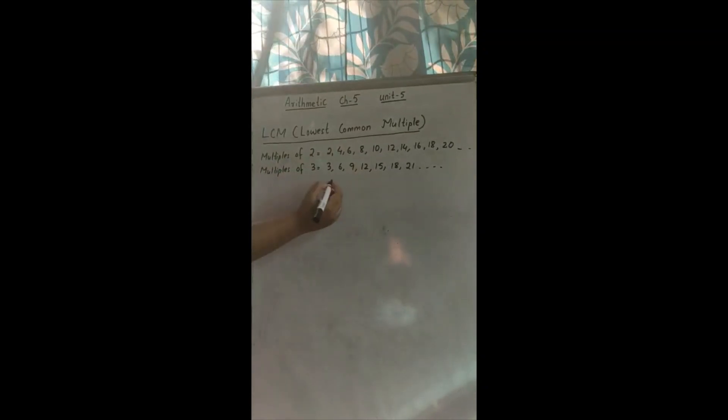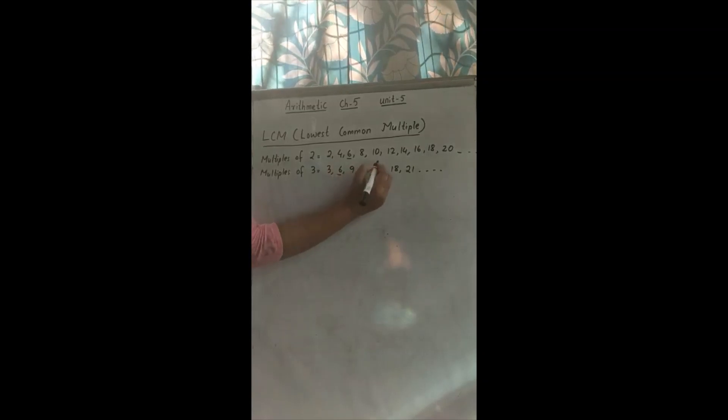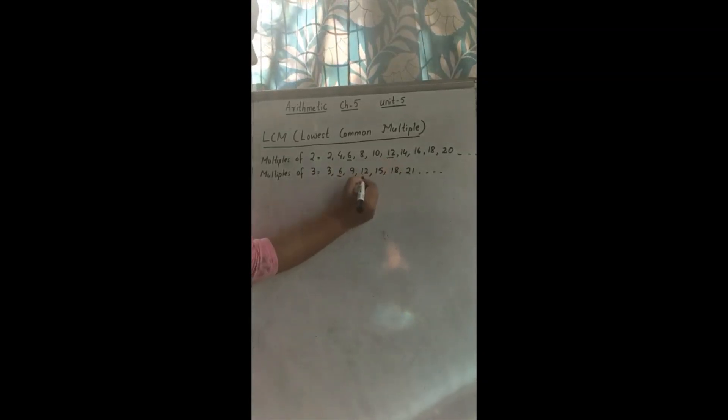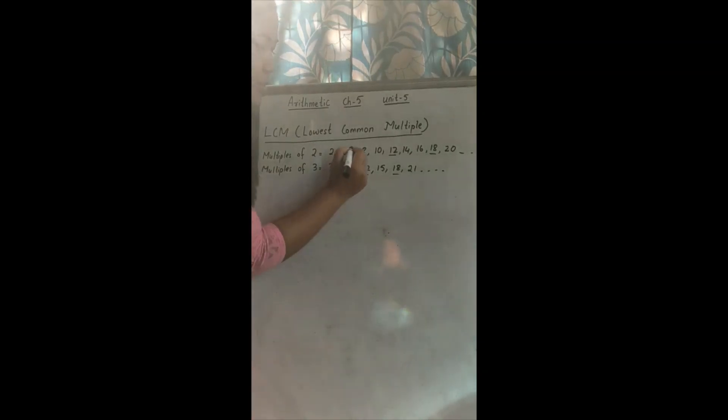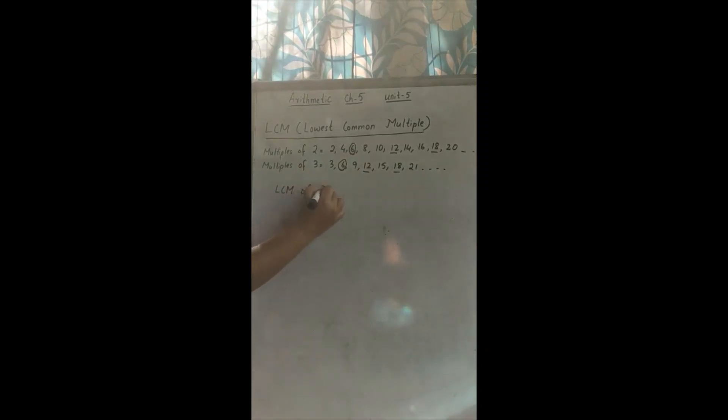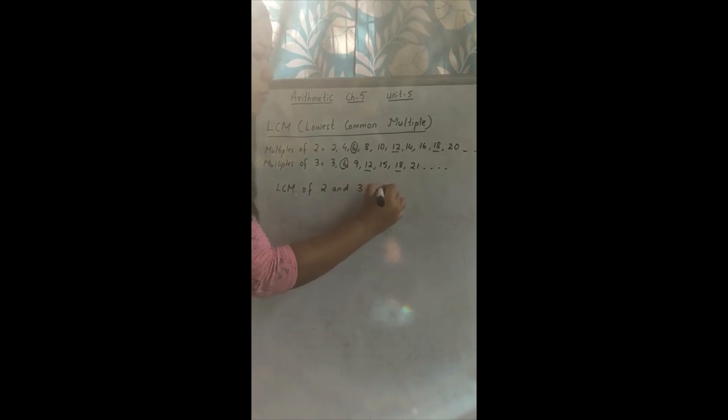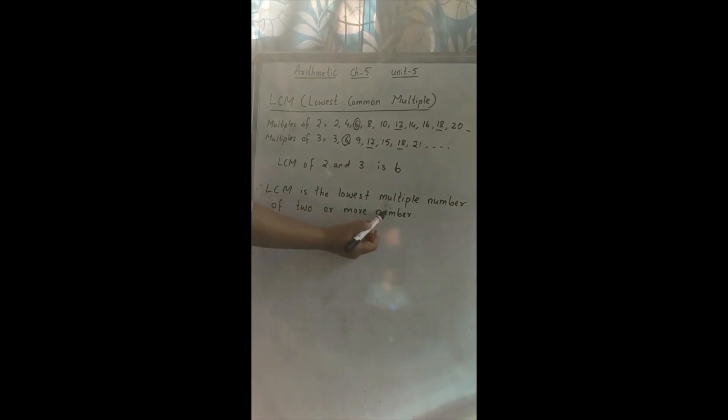Now let us understand what is LCM — lowest common multiples. I have written some examples: multiples of 2 and multiples of 3. Now let us see the common multiples here: 6 and 6, then 12 and 12, then 18 and 18. Now you tell me which is the smallest multiple here — 6. Yes, 6 is the smallest multiple. So LCM of 2 and 3 is 6. So LCM is the lowest multiple of 2 or more numbers.